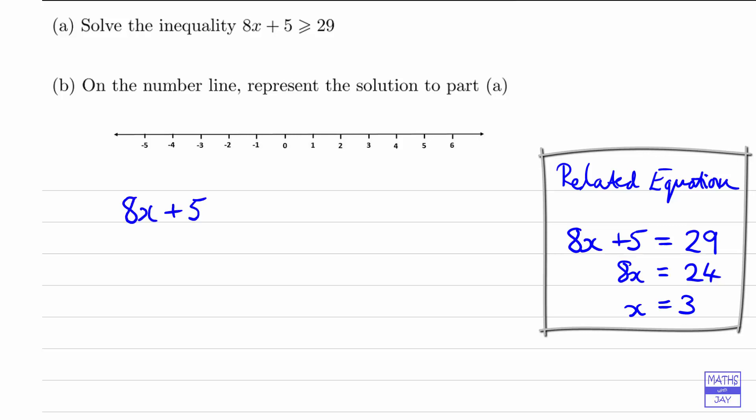So we've got 8x plus 5 is greater than or equal to 29. We can subtract 5 from both sides, so 8x must be greater than or equal to 24. And then dividing both sides by 8, we're dividing by a positive number so that's not going to change the direction of the inequality. We've got x is greater than or equal to 3. So you can see that if you can solve the related equation, solving the inequality is just as simple really.